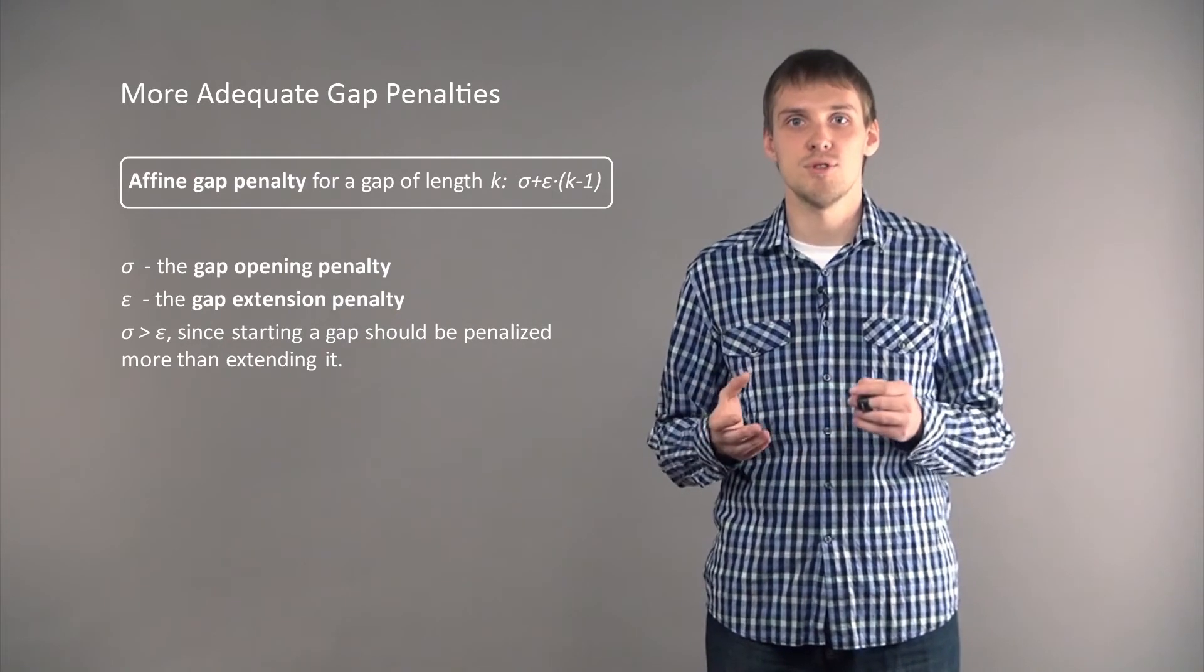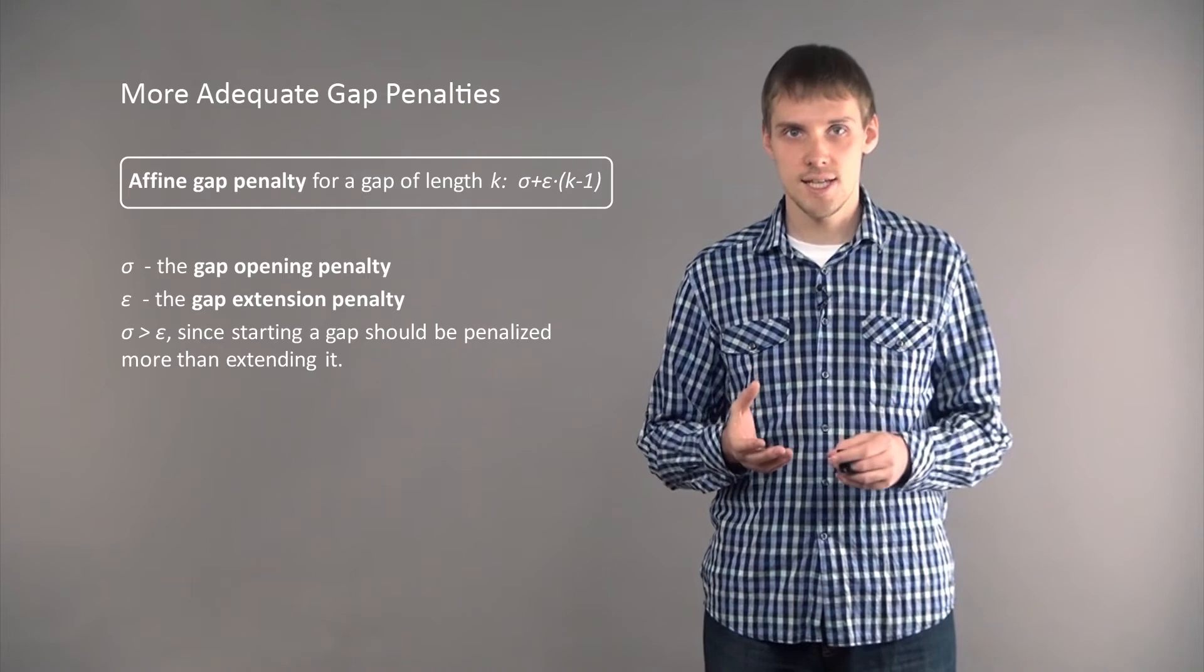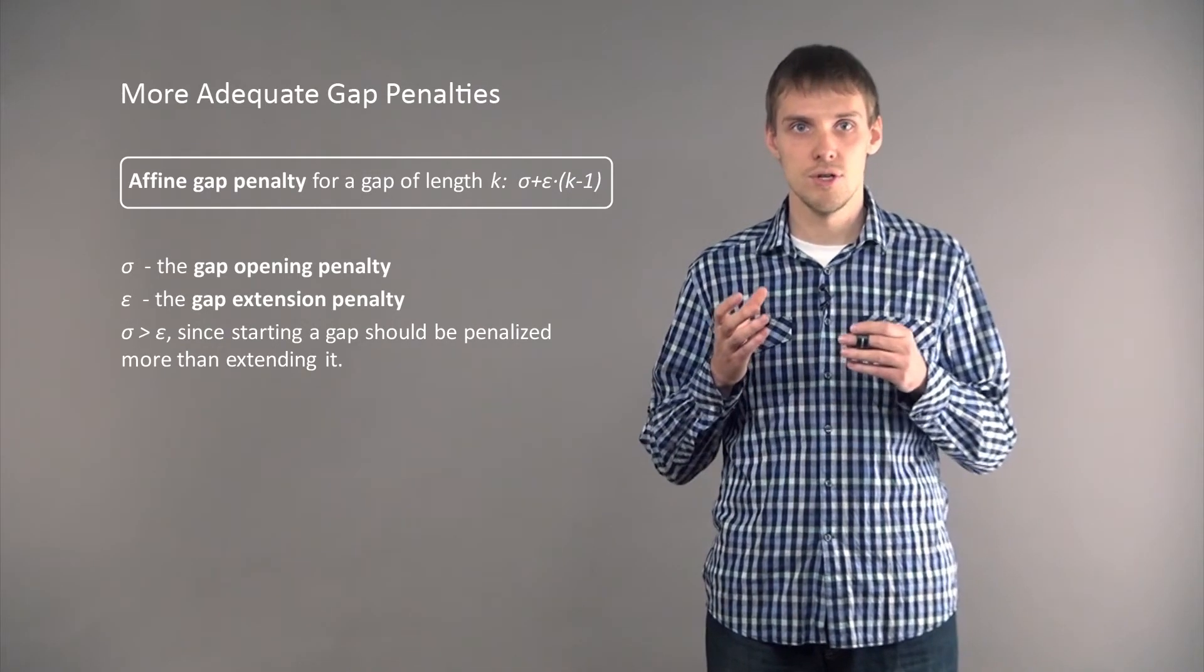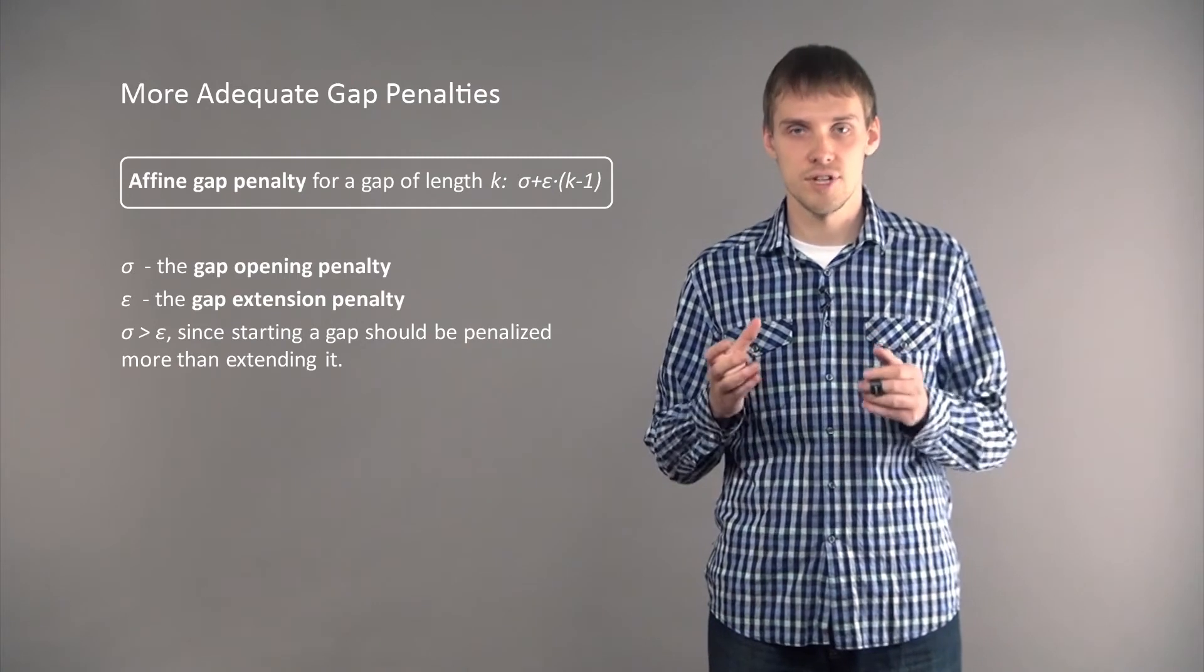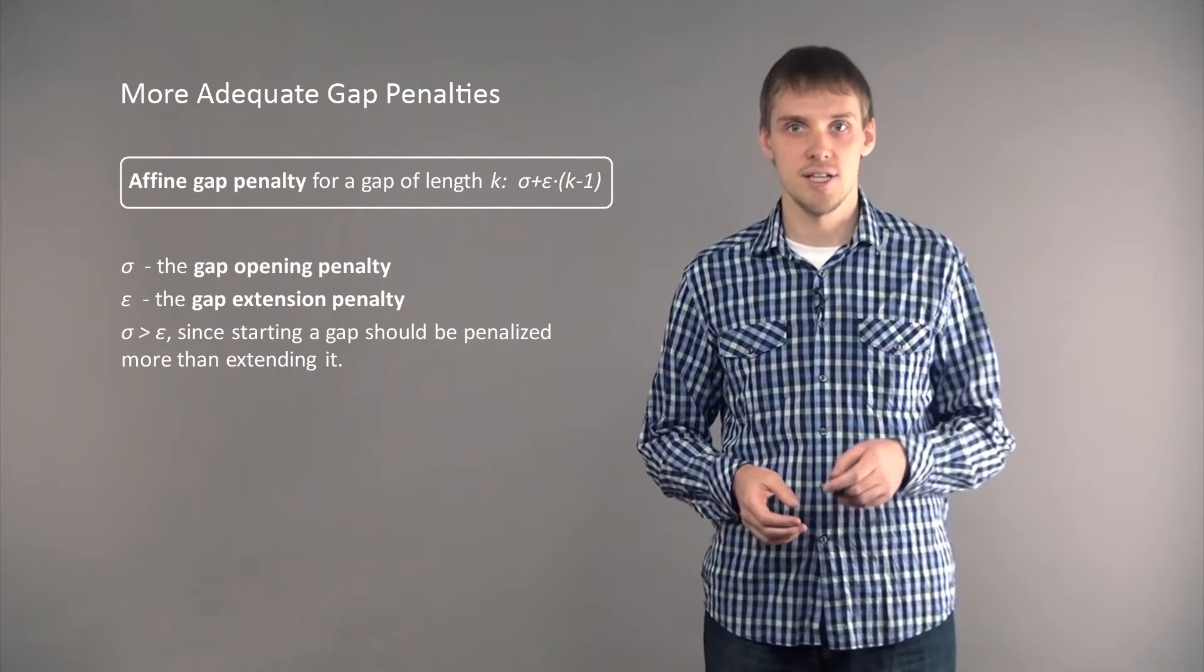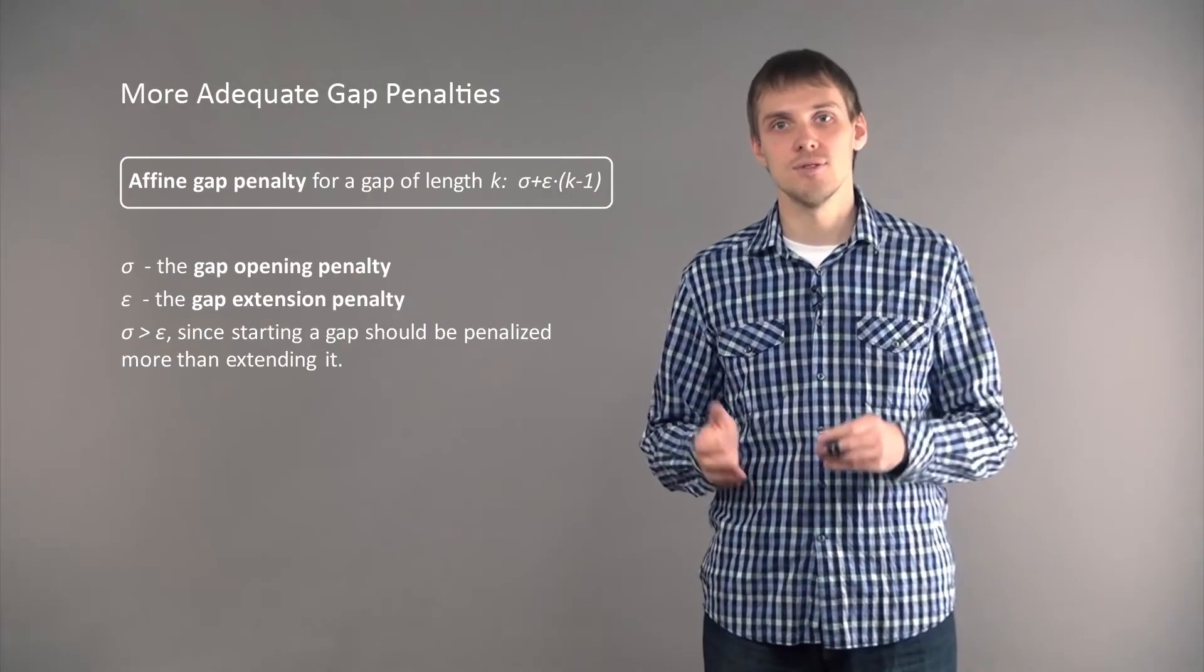Usually sigma is more than epsilon since starting a gap should be penalized more than extending it. The formula to calculate penalty for a gap of length k will be sigma plus epsilon times k minus 1. So let's take a look now how we can use this in our Manhattan grid.